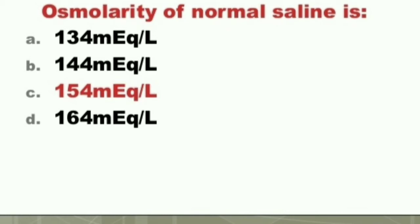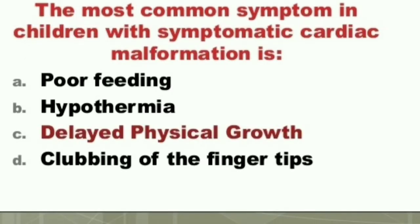Next question: The osmolarity of normal saline is: A) 134 mEq/L, B) 144 mEq/L, C) 154 mEq/L, D) 164 mEq/L. The answer is C) 154 mEq/L. The osmolarity of normal saline is 154 milliequivalents per liter.